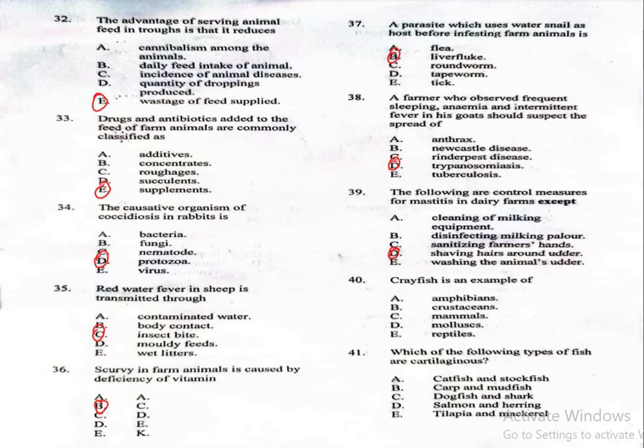Question 40: Crayfish is an example of A, amphibians; B, crustaceans; C, mammals; D, molluscs; E, reptiles. The correct answer is crustaceans, which is option B. Crayfish belong to the group crustaceans, which also includes crabs and lobsters.